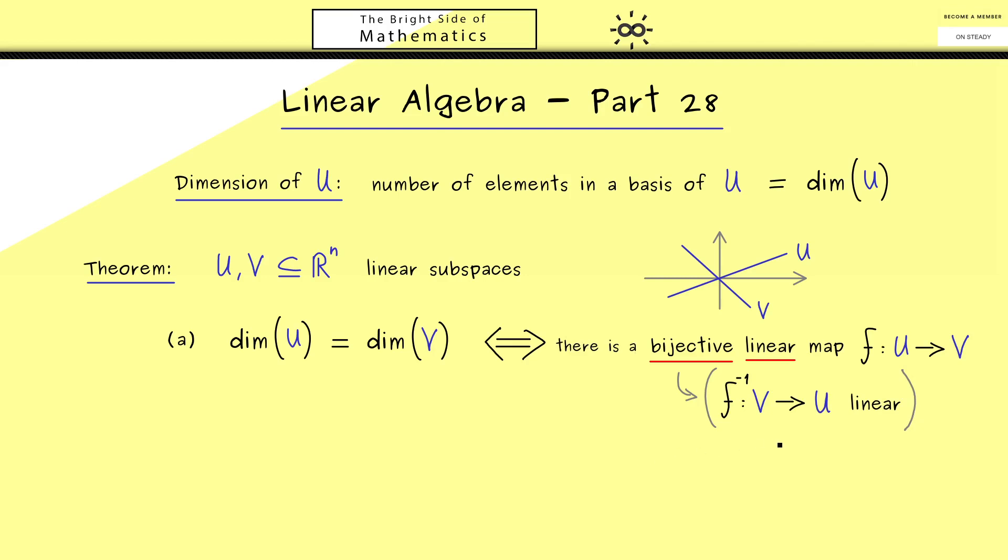Okay, now going back to the claim here. This is an equivalence, so if we find such a bijective linear map f we can conclude that the dimensions of the two subspaces coincide. So in other words such a bijective linear map can never change the dimension of the subspaces. So this is something you should definitely remember. The dimension and bijective linear maps are connected in this way. So you could see it like that, that the only thing that the map f does is renaming the vectors in U.